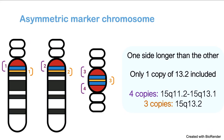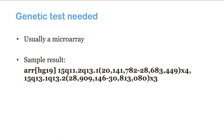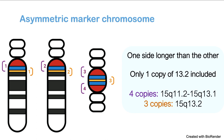One other thing to mention is asymmetry — where one side of a marker chromosome is actually longer than the other. You might have four copies of some regions, like the red and blue sections, but only one copy of the yellow, because it's only included once instead of twice. This can look unusual on a report, showing four copies of one thing and three of another, but it really just means it's not a perfect mirror image.